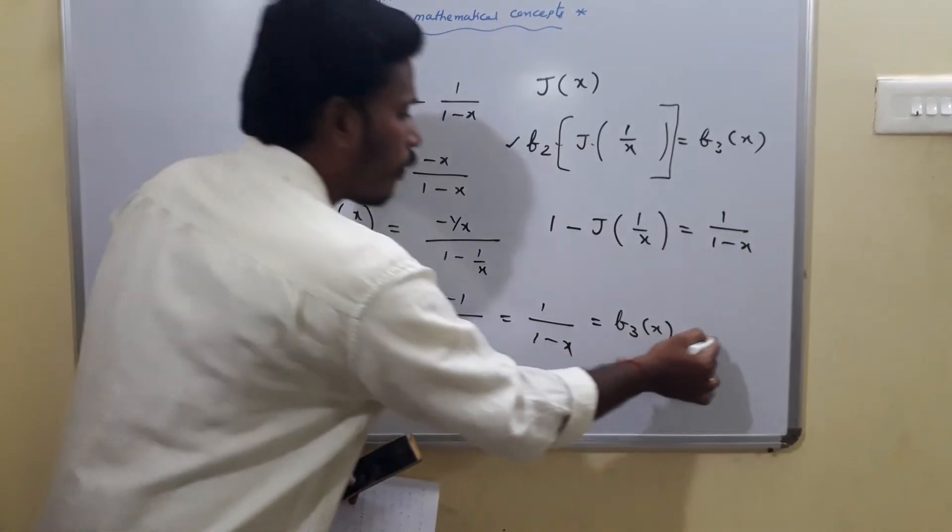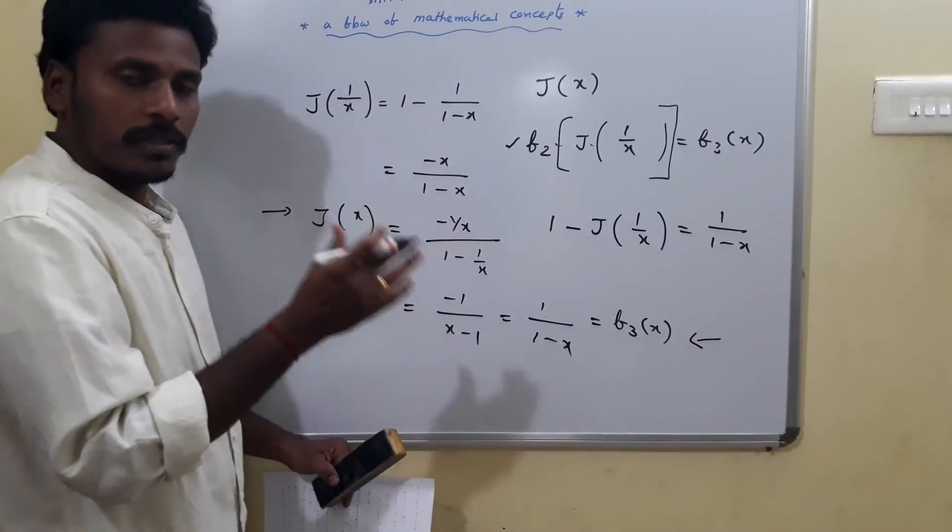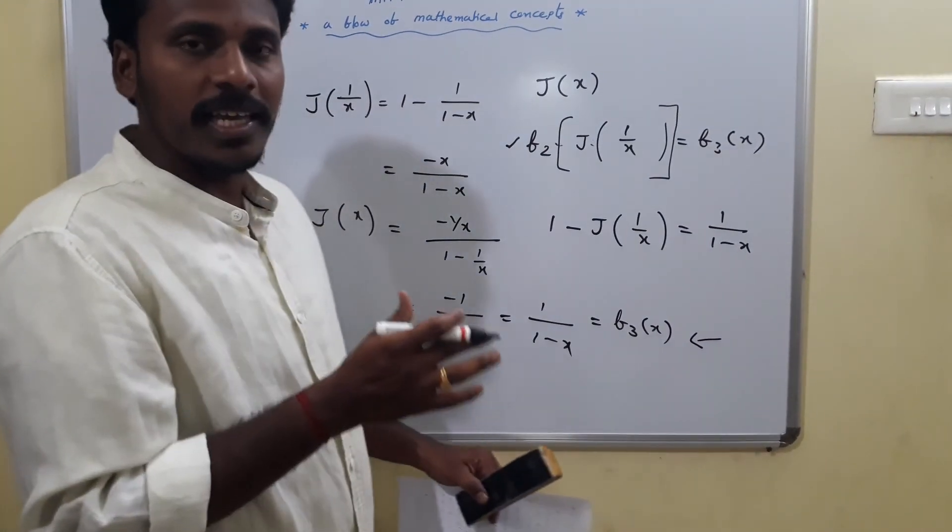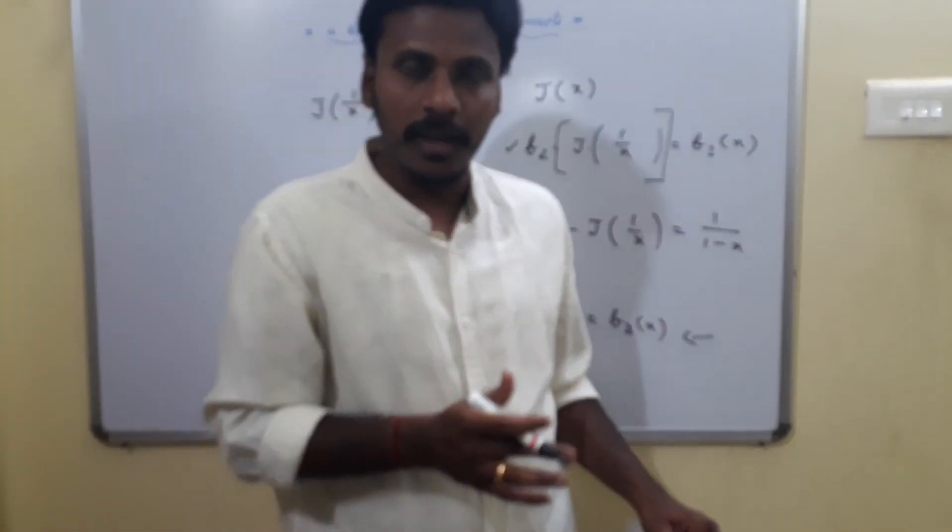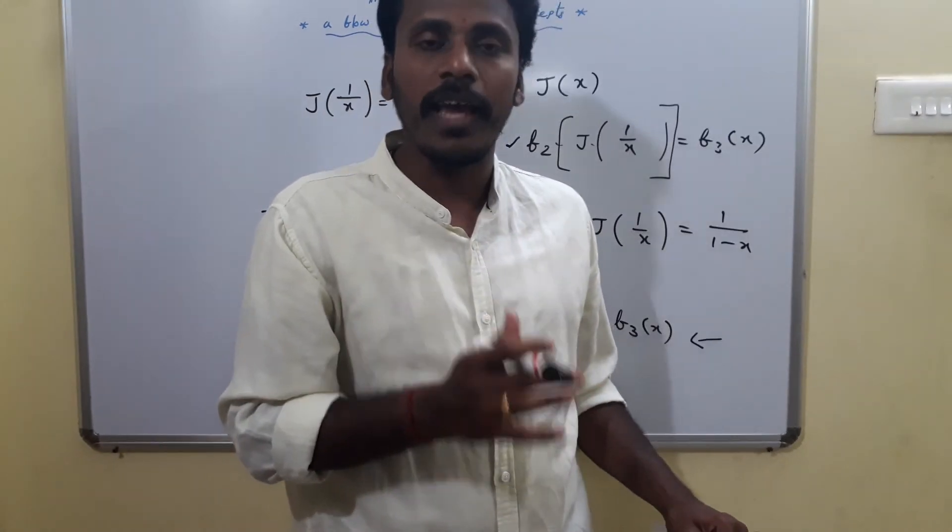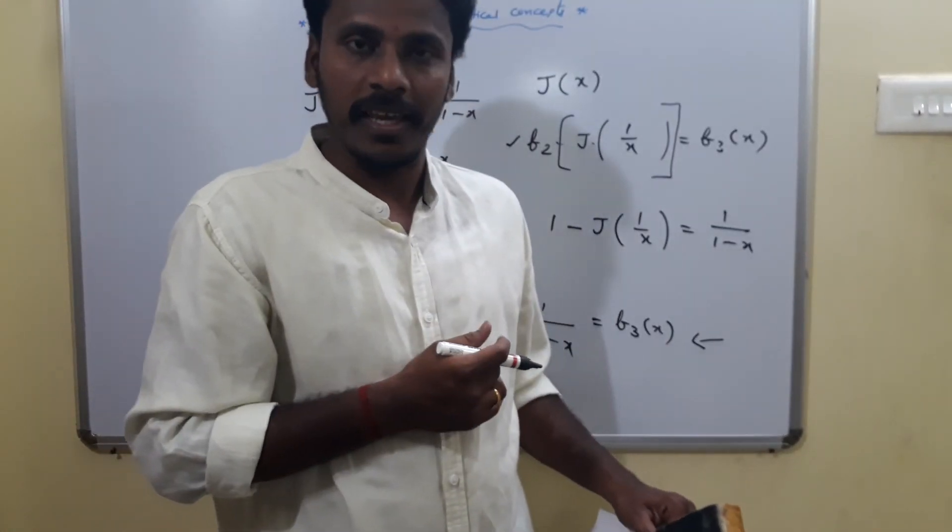So J of x is again F3 of x. This is an easy question asked in JEE Main January 2019 in the morning session of January 9 from the chapter Functions. Thank you.